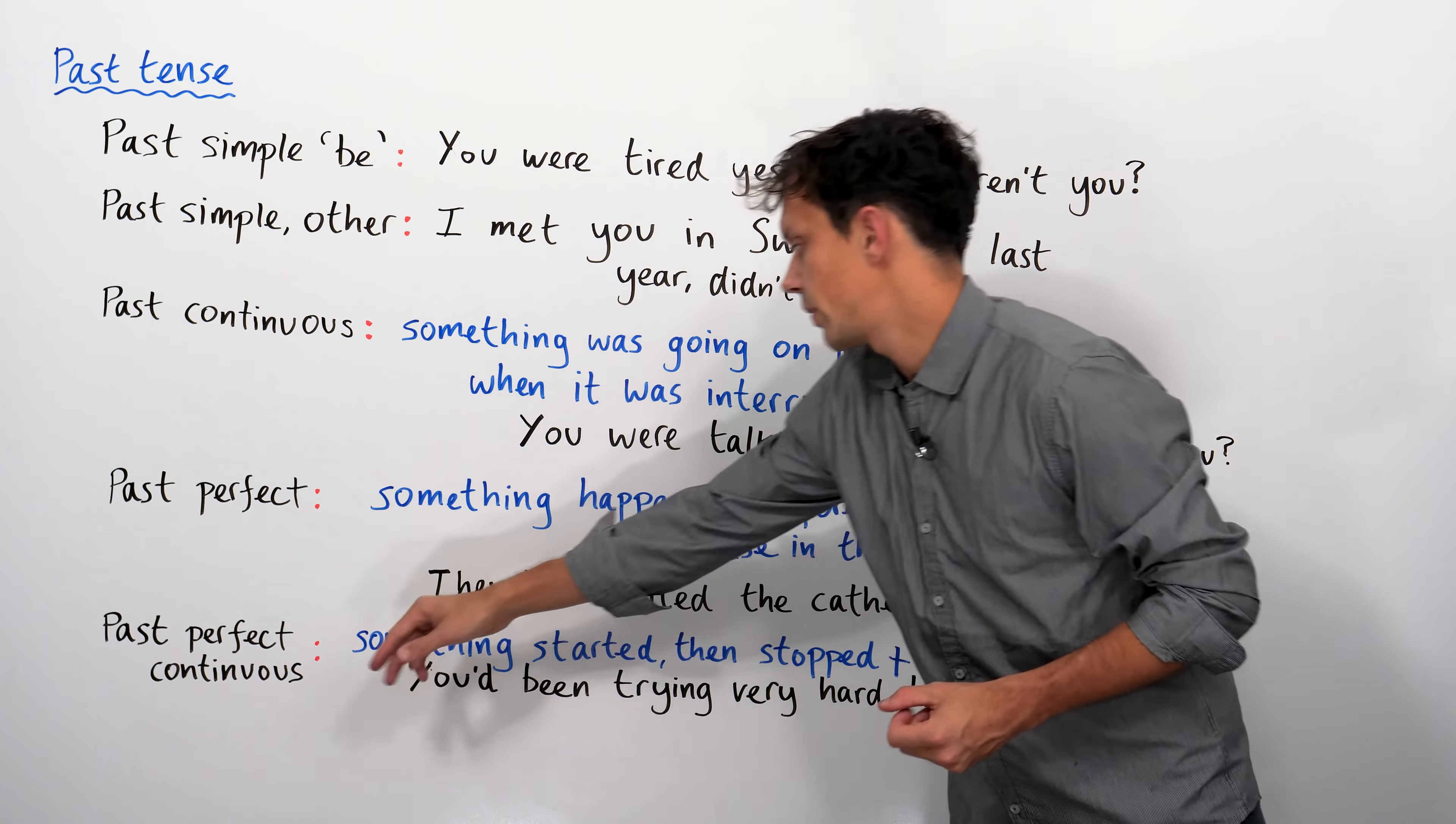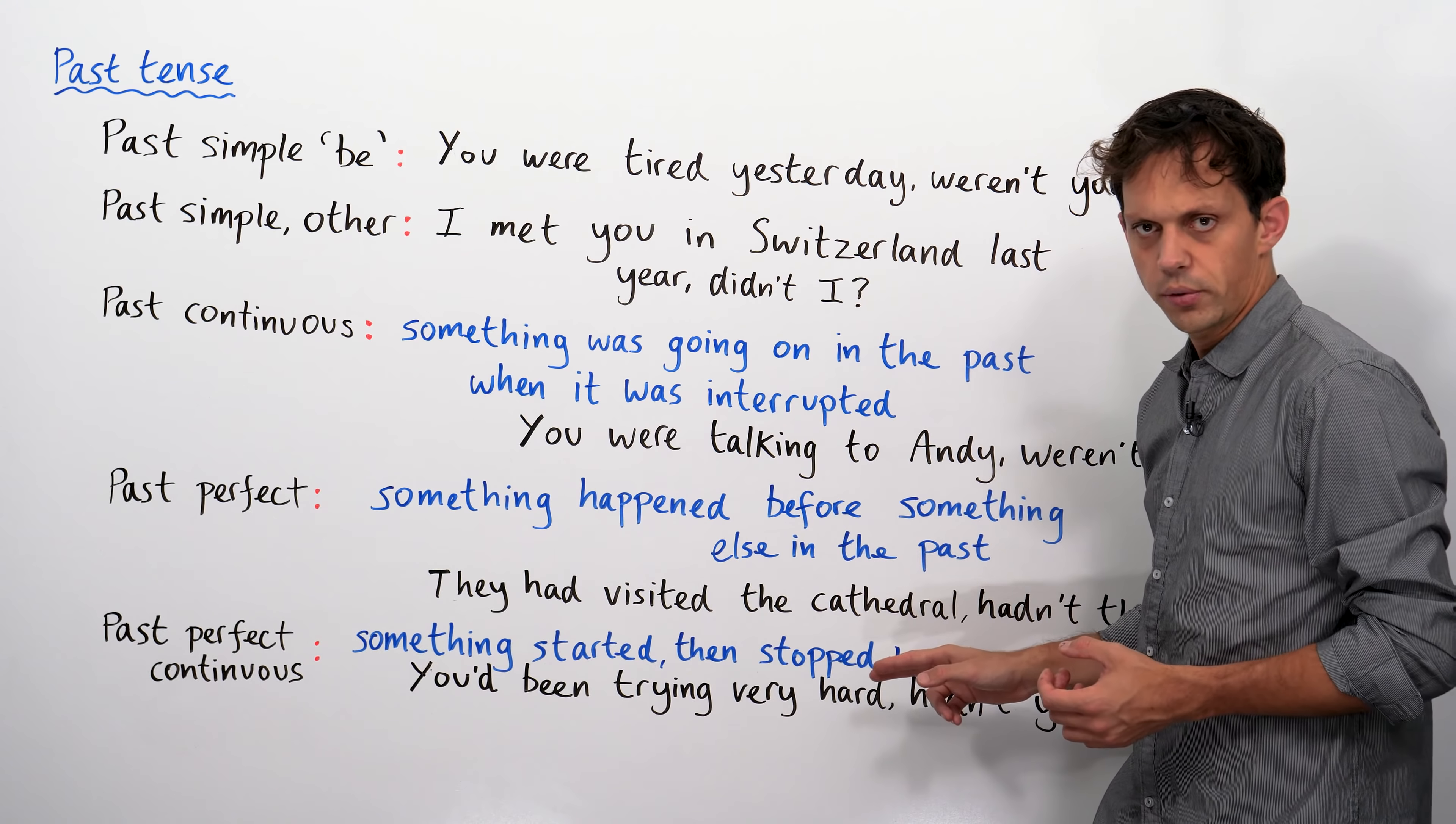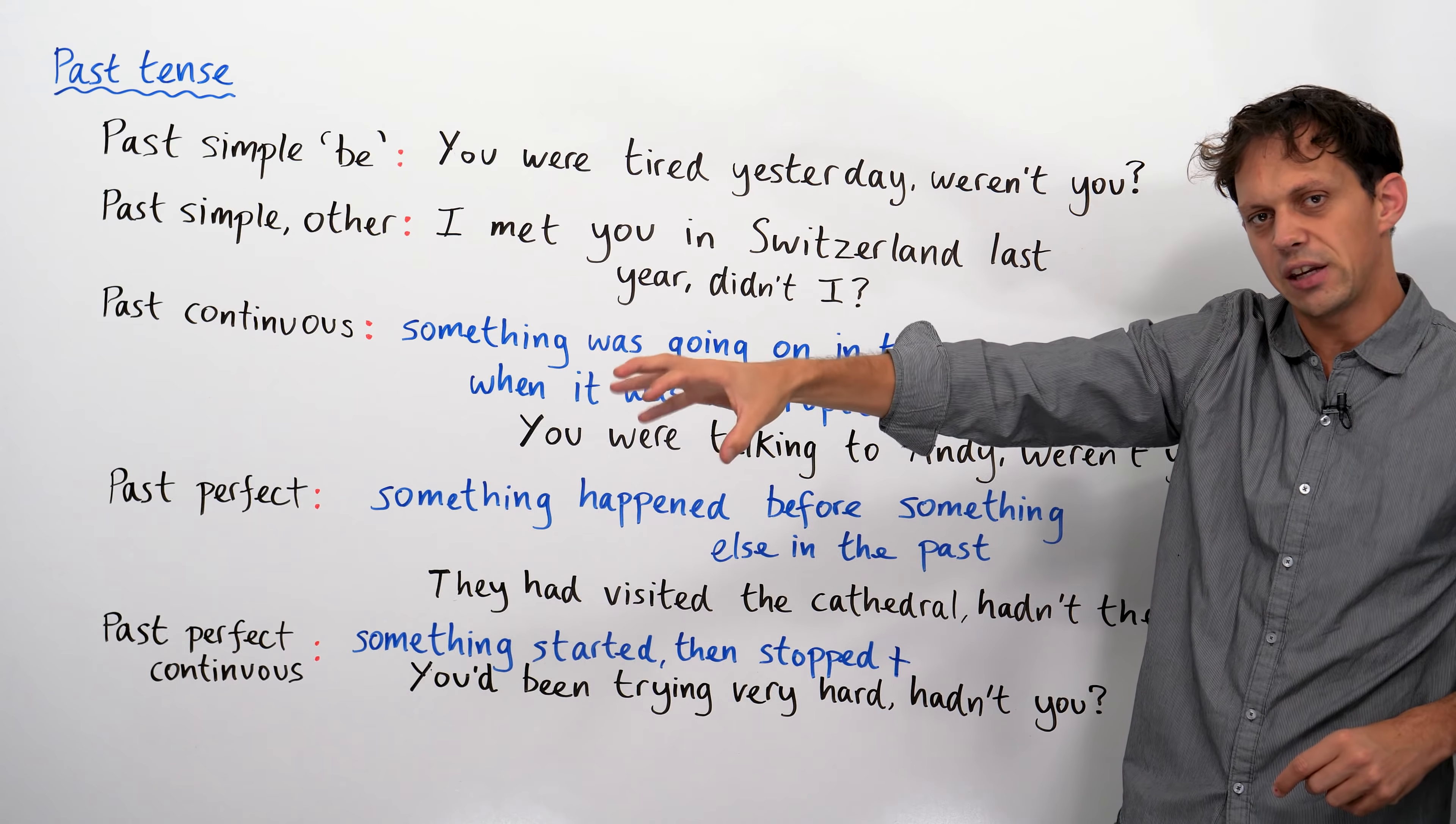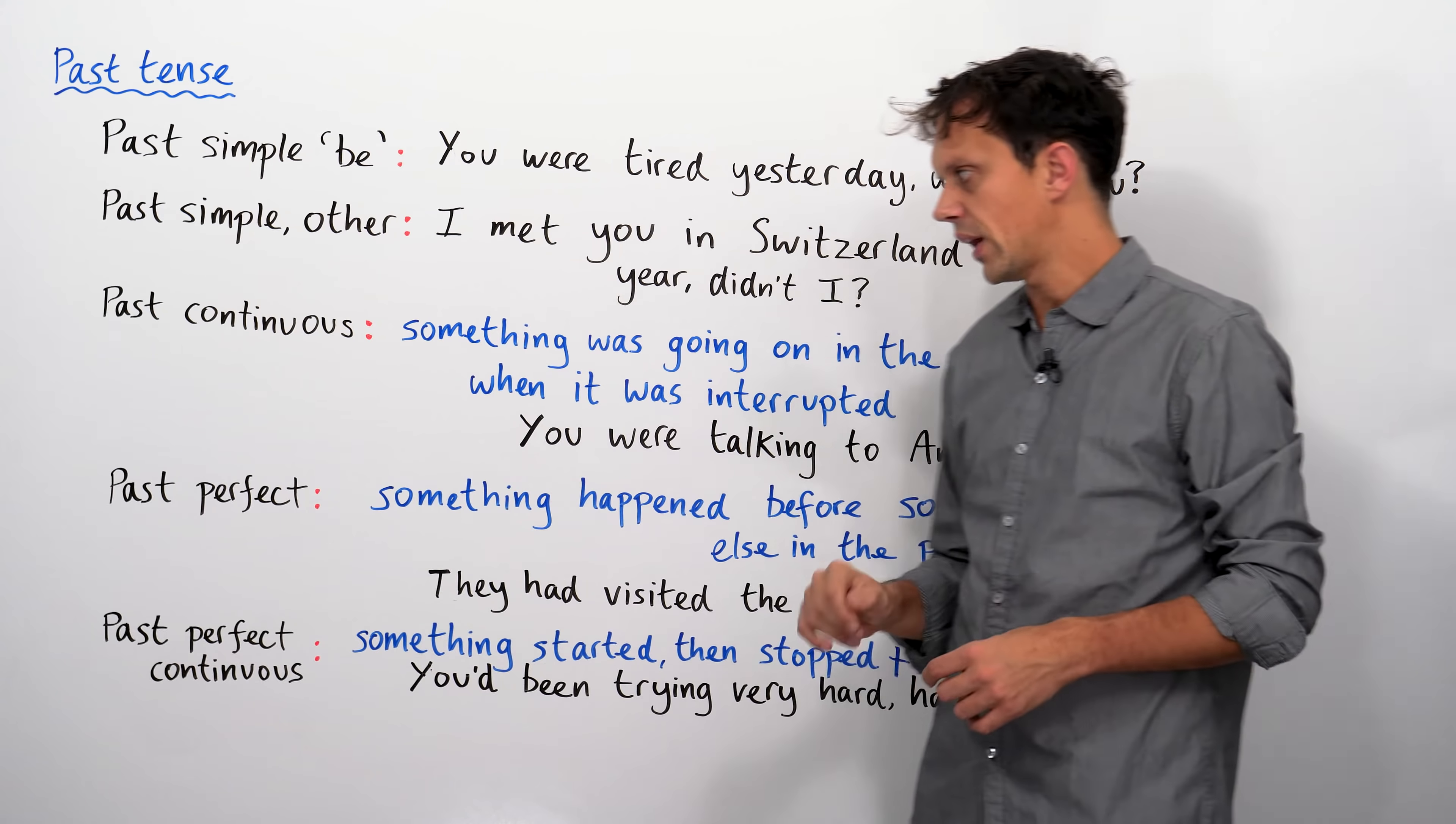The past perfect continuous. Now, I'm not going to go into a huge amount of the detail here, because there are different uses of this tense, but one of those uses is to talk about something that has started, but then stopped. For example, you'd been trying very hard, hadn't you? So, we have some trying. The trying stops, but I'm talking about the thing that had been started. You'd been trying very hard, hadn't you? I'd been crying, hadn't I? They'd been cheating, hadn't they? And then the teacher told them off and said, no, no, no, don't do that. Naughty.